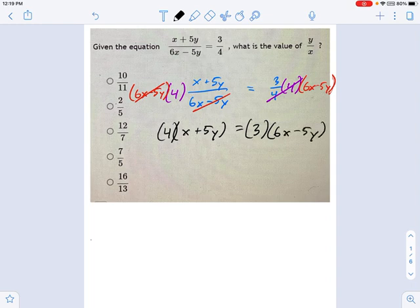Okay, well, let's break those parentheses open. Let's see what we get here. 4x plus 20y after the distribution equals 18x. Careful now. We've got a 3 times a negative. Make sure you carry that negative. That's going to be minus 15y.